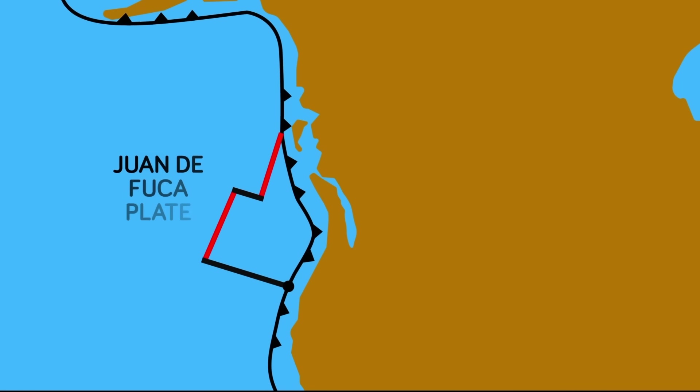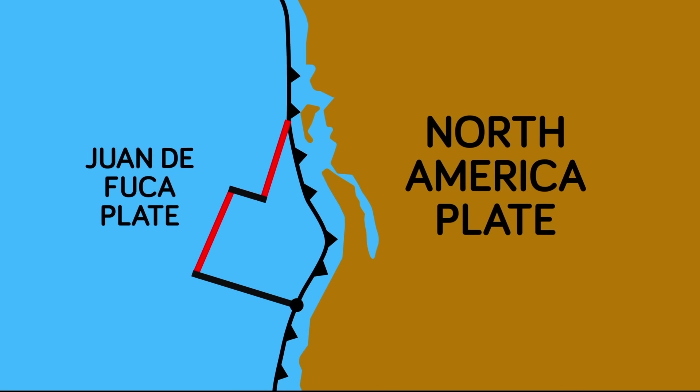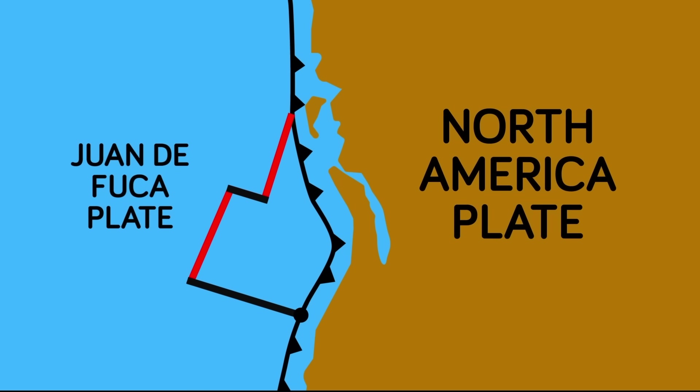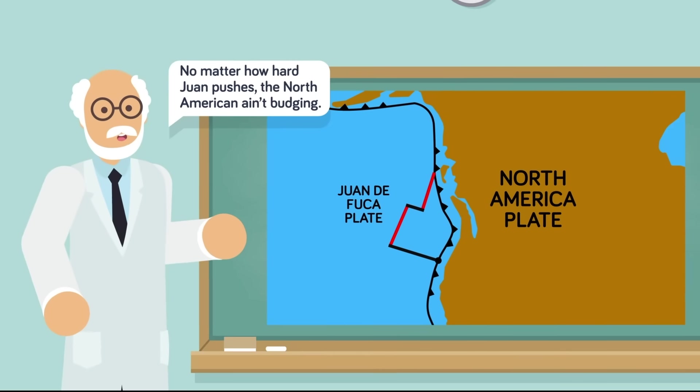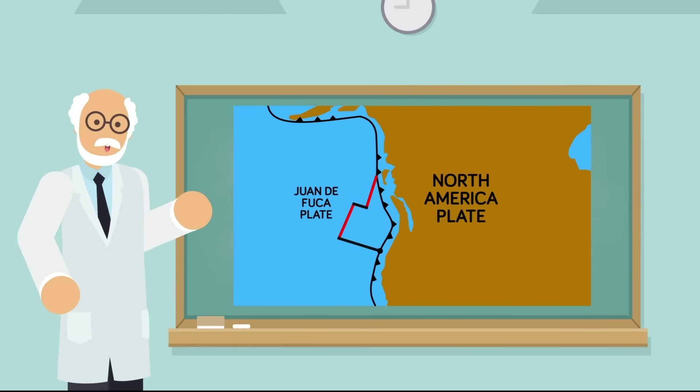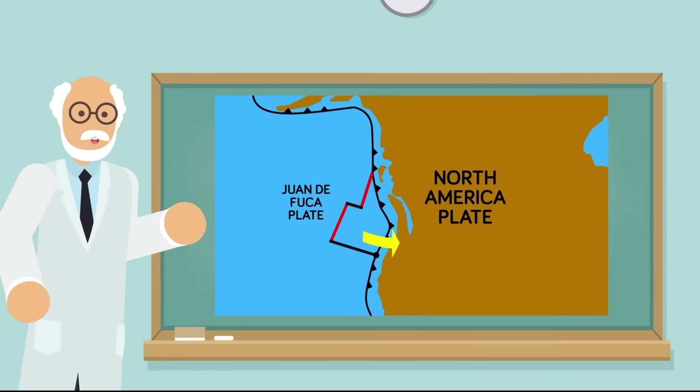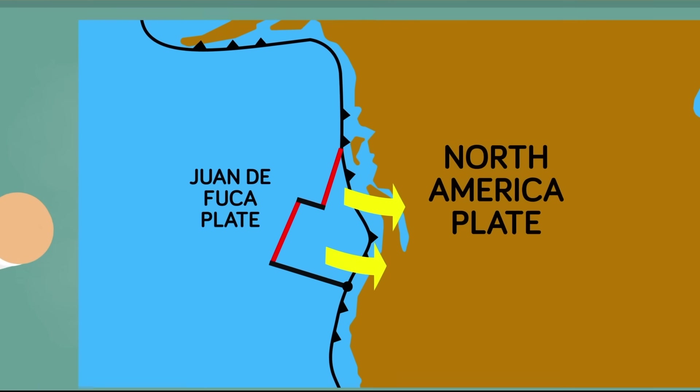The western plate, known as the Juan de Fuca, a much too sassy name for a thing that causes deadly earthquakes, pushing under the eastern plate, known as the North American plate. Unfortunately for Juan, the North American plate is stuck in its place as it's jammed up against another plate. So instead of peacefully shifting around each other, Juan de Fuca ends up violently grating under the North American plate, making the latter rise.